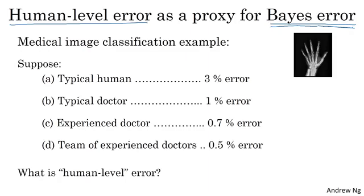Here's how I would define human-level error. If you want a proxy or an estimate for Bayes error, then given that a team of experienced doctors discussing and debating can achieve 0.5% error, we know that Bayes error is less than or equal to 0.5%. Because some system, a team of doctors, can achieve 0.5% error, so by definition, the theoretically optimal error has got to be 0.5% or lower.